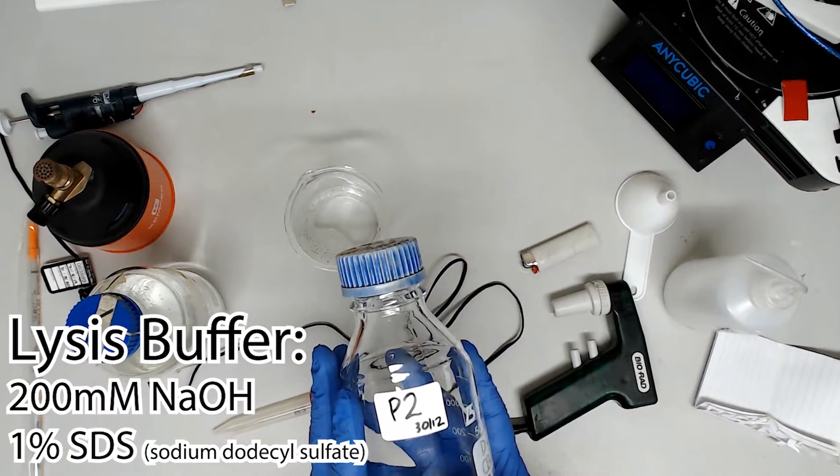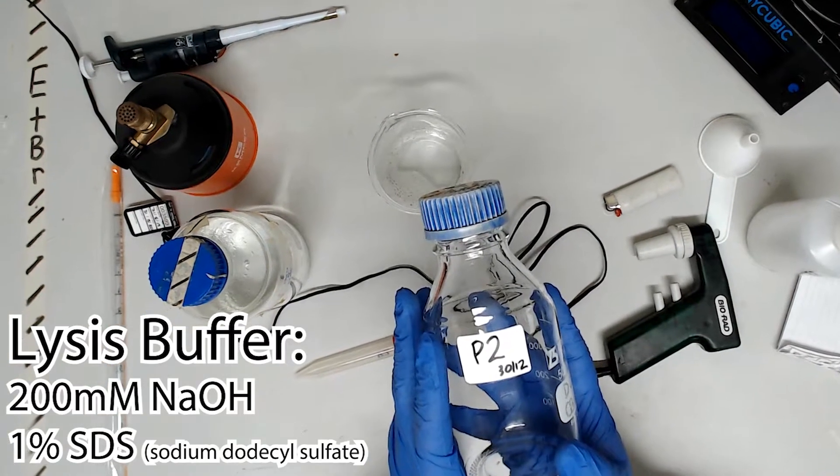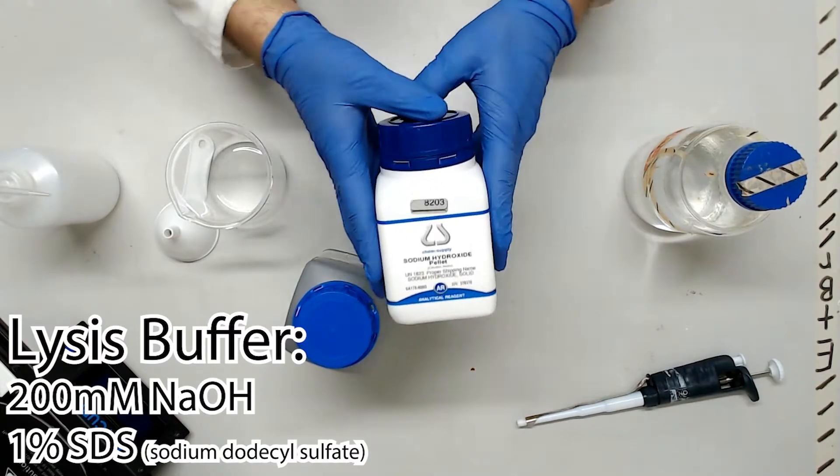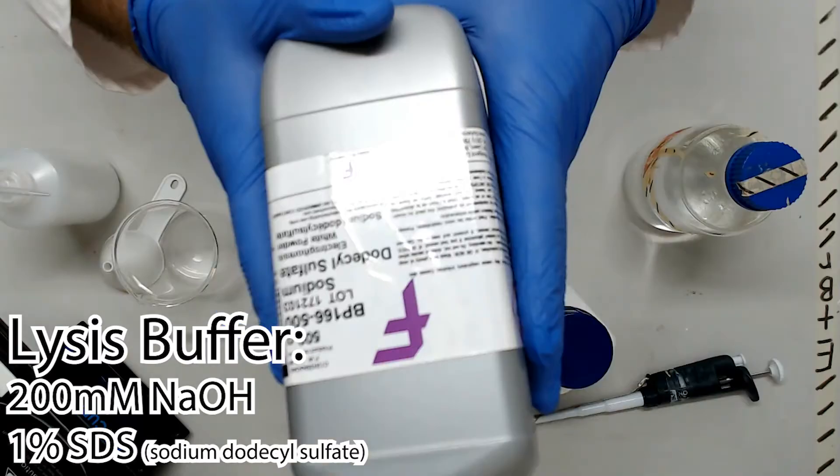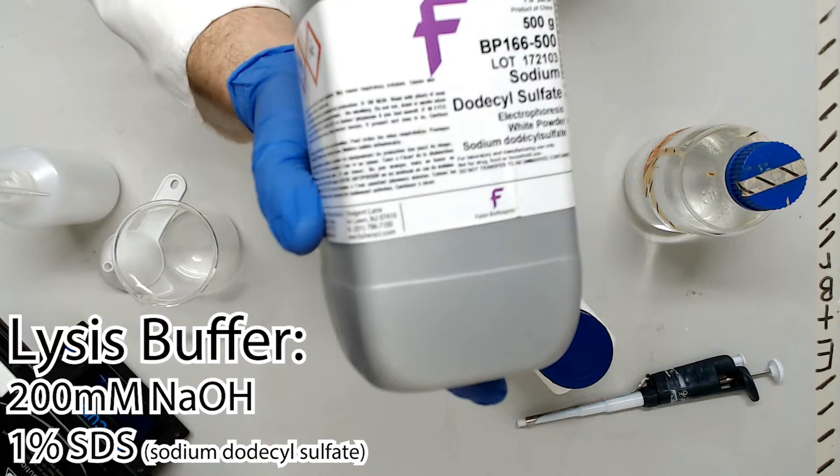The second buffer used in the mini prep process is buffer P2, also known as buffer B or lysis buffer. The role of this buffer is to use sodium hydroxide to lyse the cell while a powerful detergent named SDS solubilizes protein, lipids, and chromosomal DNA.